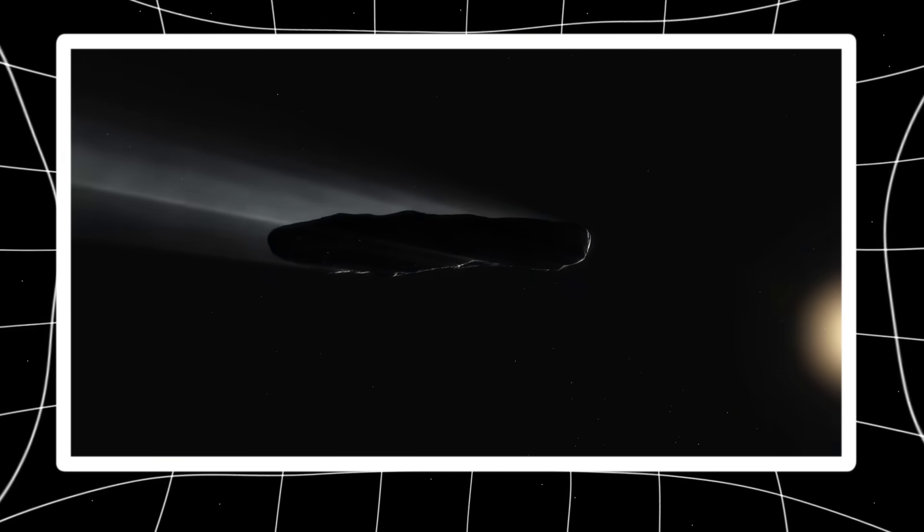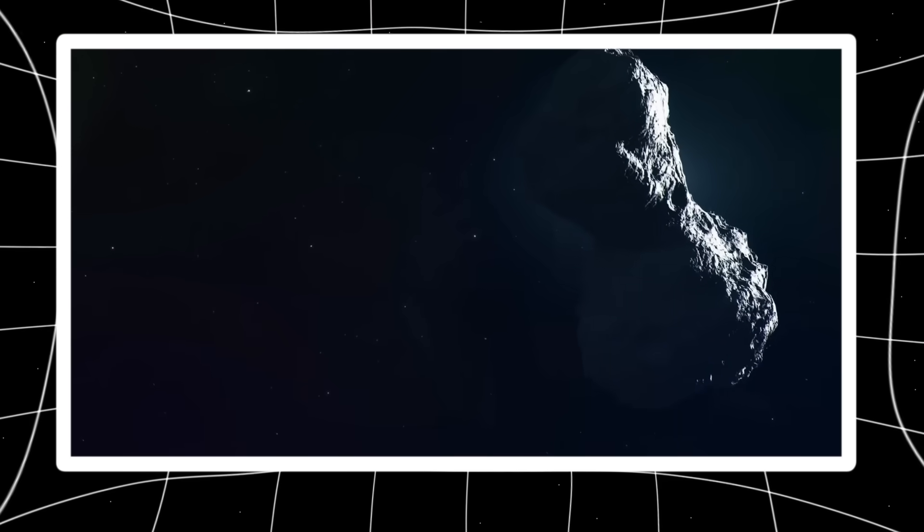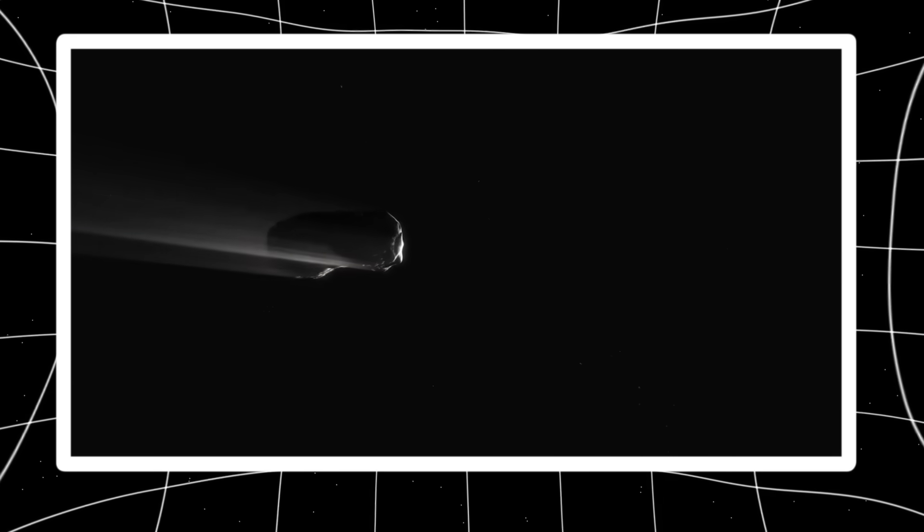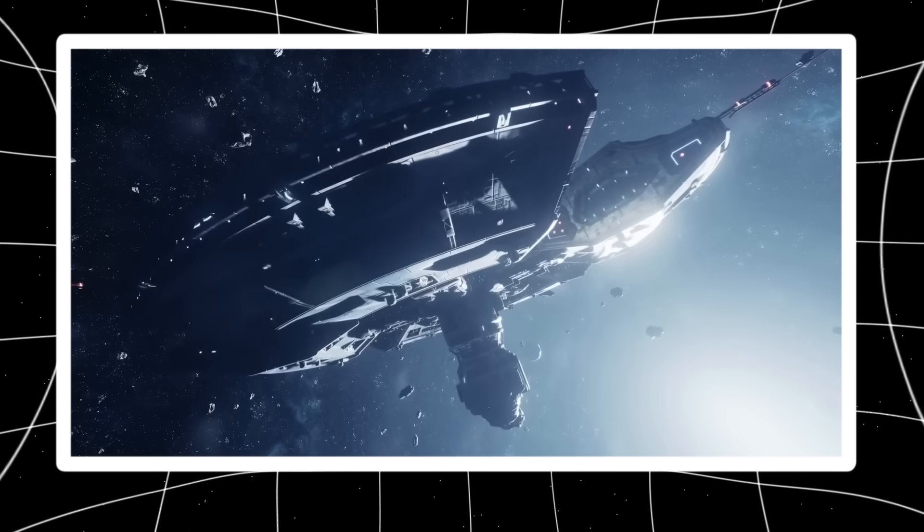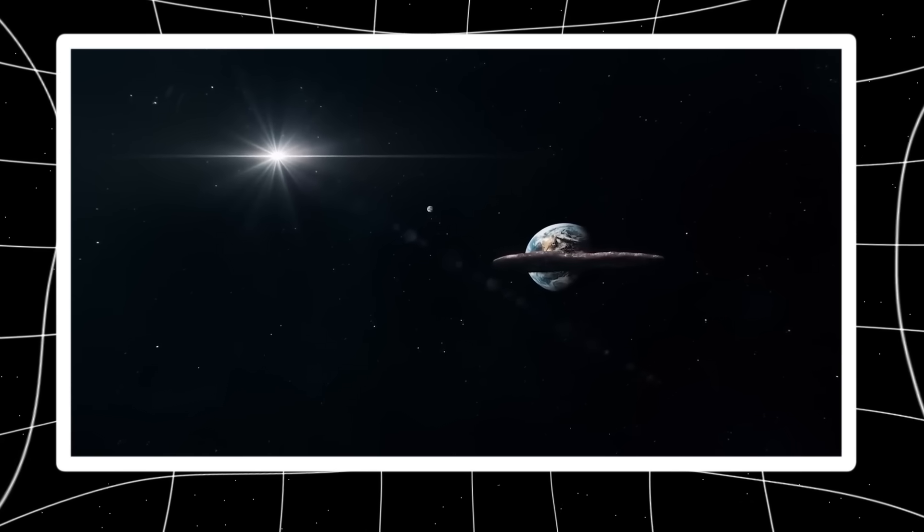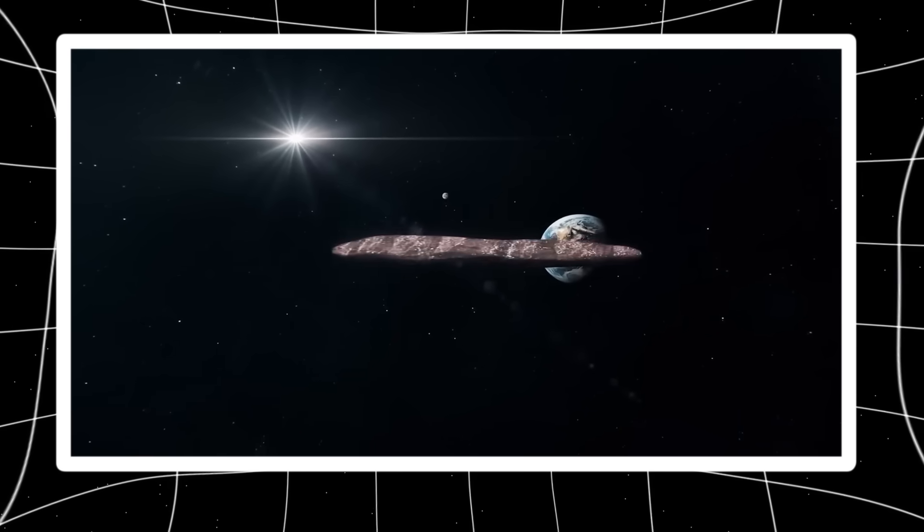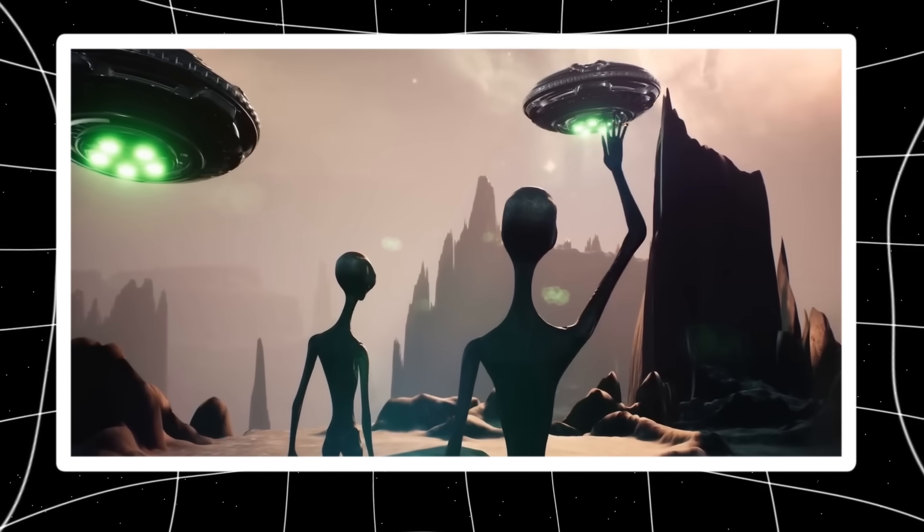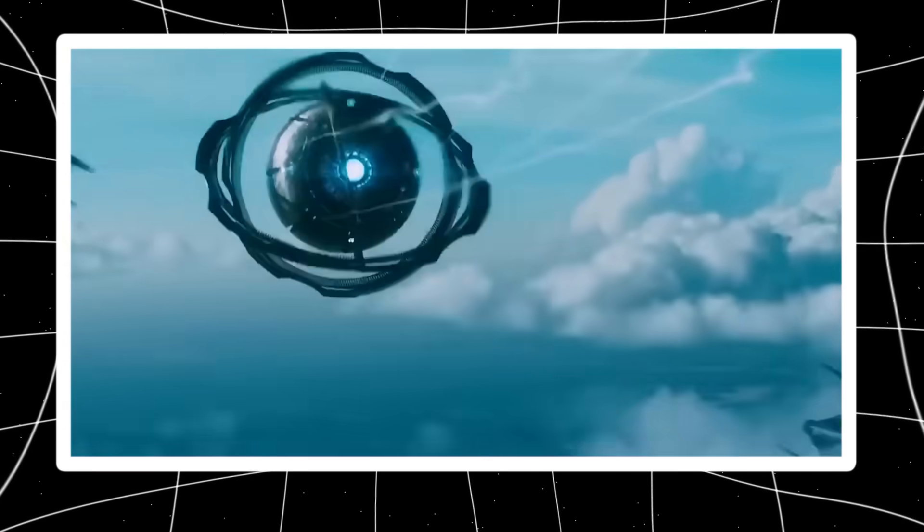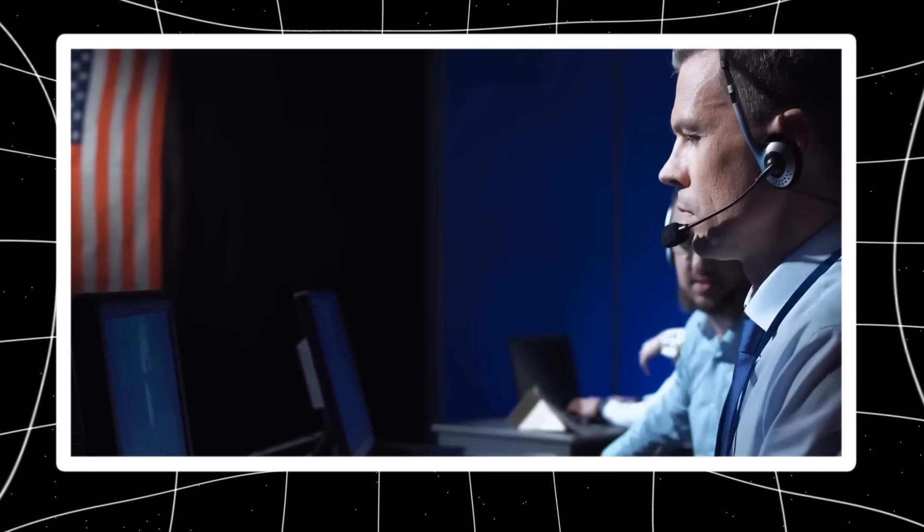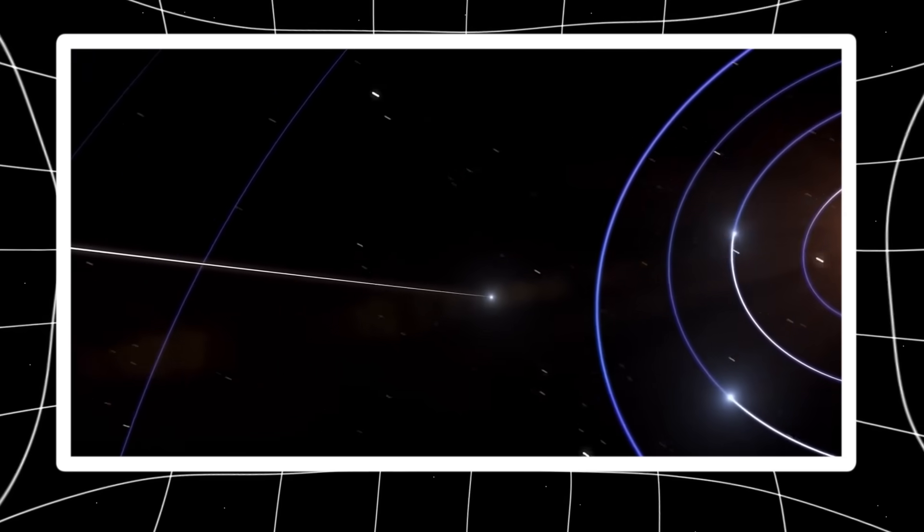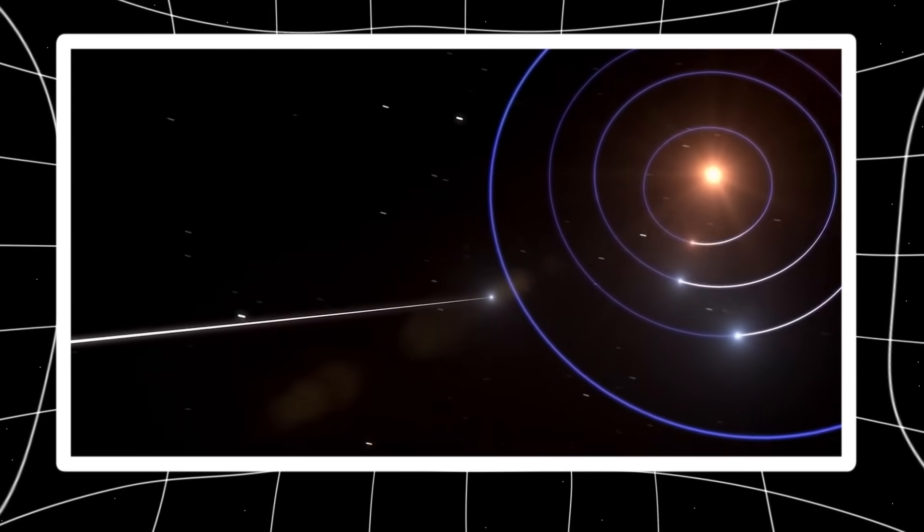When Oumuamua first passed through our solar system in 2017, it already defied classification. It had no comet tail, didn't behave like an asteroid. Its elongated cigar-like shape spun erratically as it accelerated away from the sun. Scientists offered explanations from outgassing to solar radiation pressure, but none truly fit the data. And just as quickly as it appeared, it was gone, on a trajectory out of the solar system, never to return.